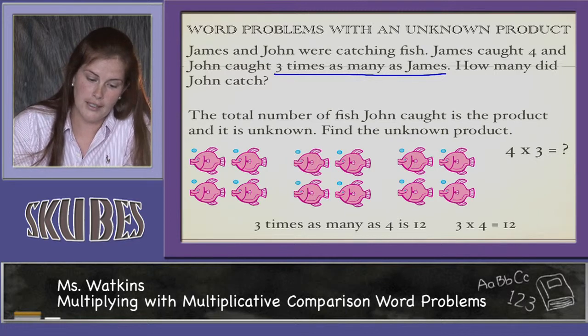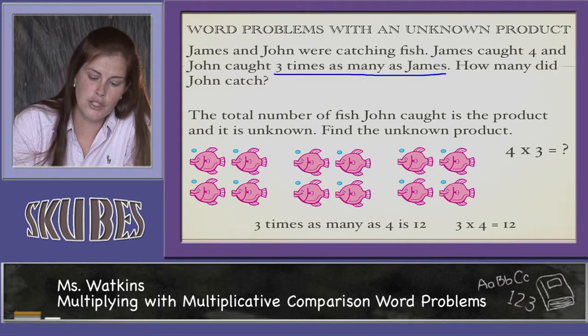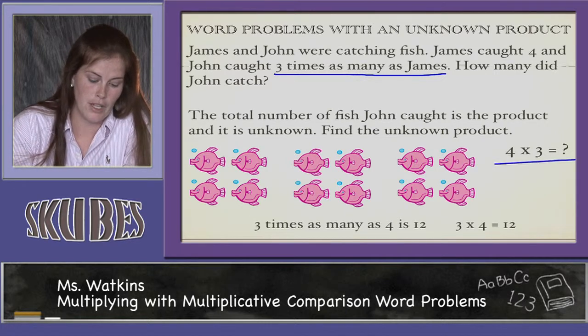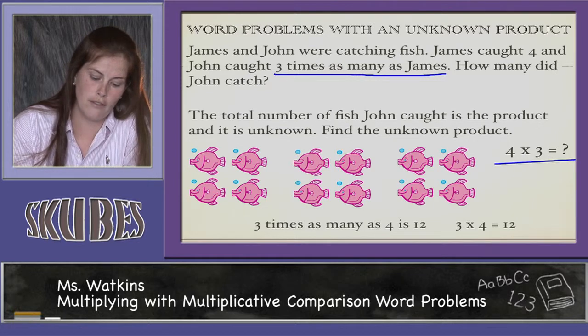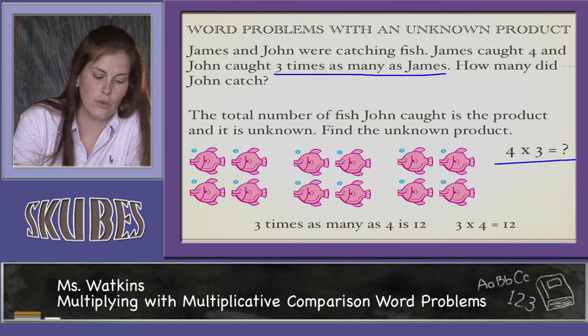So we need to find the unknown product. 4 times 3 equals what number? 3 times as many as 4 is 12. So 3 times 4 equals 12.